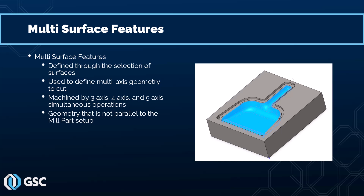The other type of feature is what's called a multi-surface feature. This presentation is not going to focus on these feature types, but essentially these features have complex surfaces or multi-directional surfaces. The way you define these features is through the selection of surfaces instead of 2D or 3D profiles. These are meant to be machined using 3-axis, 4- and 5-axis simultaneous toolpaths. Their geometry is not parallel to the mill part setup — for example, a mold with a complex surface would be considered a multi-surface feature. We are going to focus on 2.5-axis milling features.